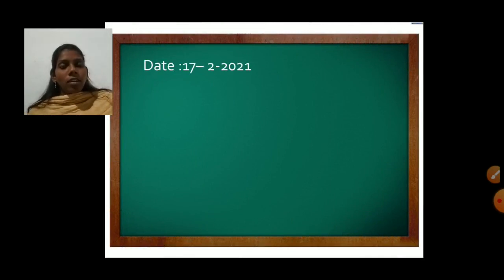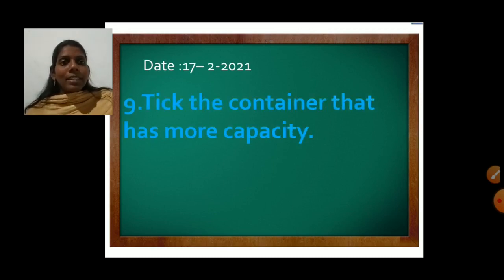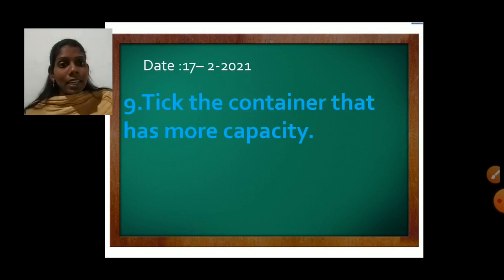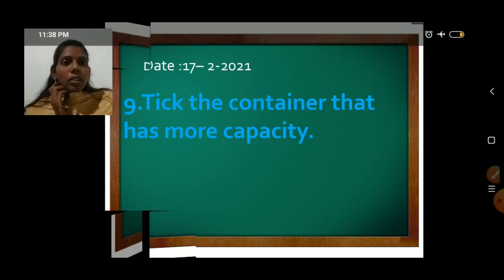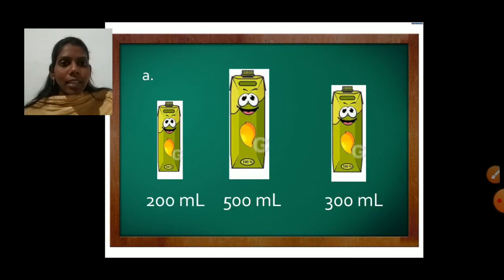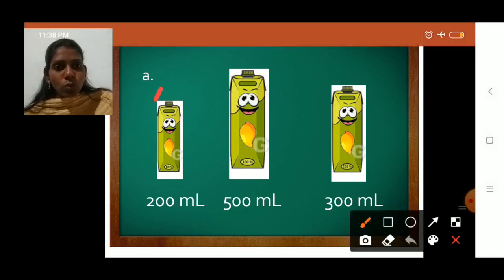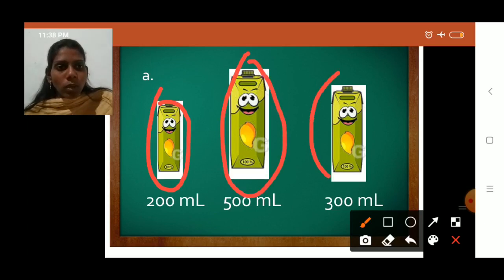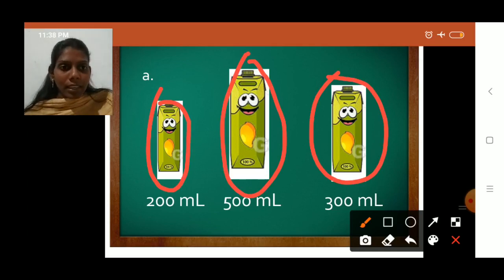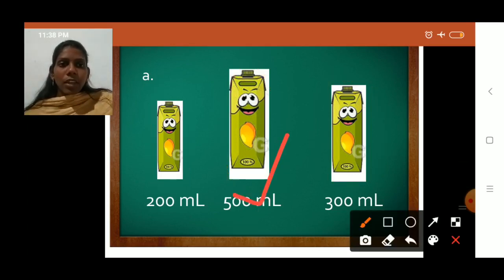Open your math textbook, write today's date — 17 February 2021 — and read question number 9: take the container that has more capacity. Look at the first set: one is 200 ml, one is 2000 ml, one is 500 ml, and one is 300 ml. Which one has more capacity? 500 ml — so take the 500 ml container.